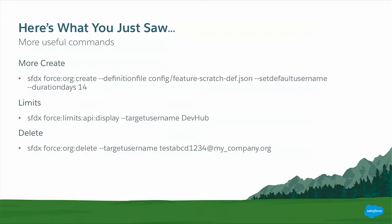So, what else did we see? We saw a more comprehensive create scenario where I could set a default username, use a much more comprehensive Scratch Org definition file, and set the expiration date of my Scratch Org. You also saw me list out the limits of how many Scratch Orgs I can create, how many more I can create, how many I can delete. And you saw me delete Scratch Orgs if I didn't want to wait for that natural expiration date.